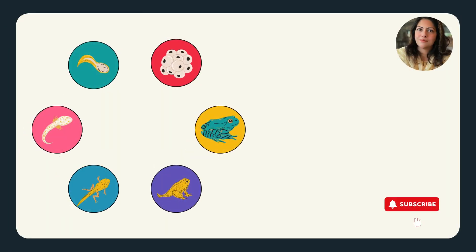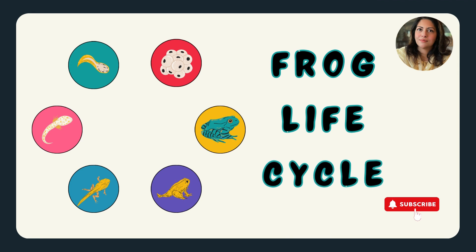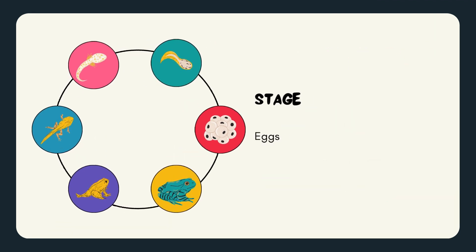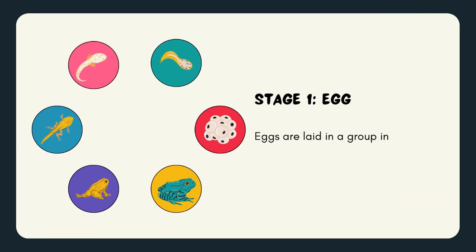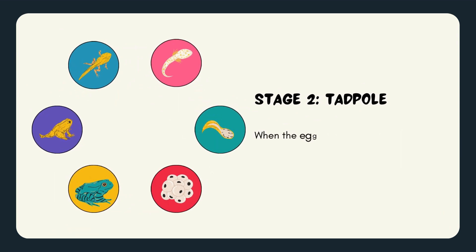Hello friends, welcome to my channel. Today we are going to learn about the life cycle of the frog. Stage 1: eggs are laid in a group in the water by the frog. Stage 2: when the eggs hatch, tadpoles emerge — these are the larvae of the frog.